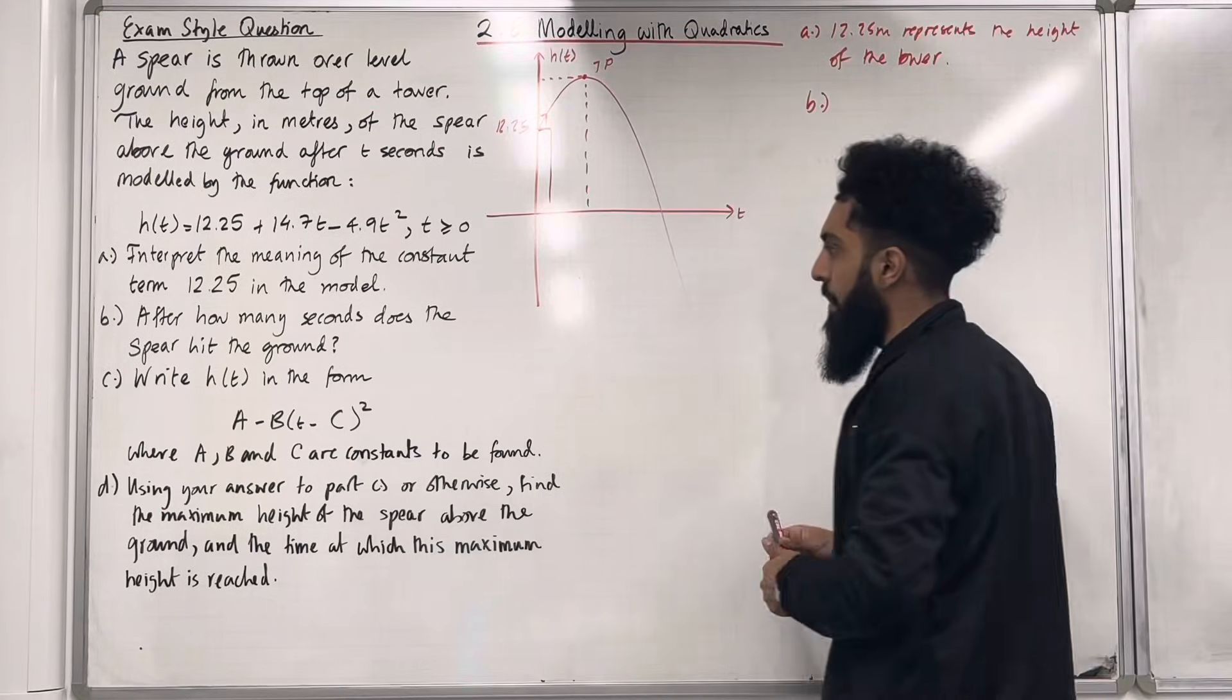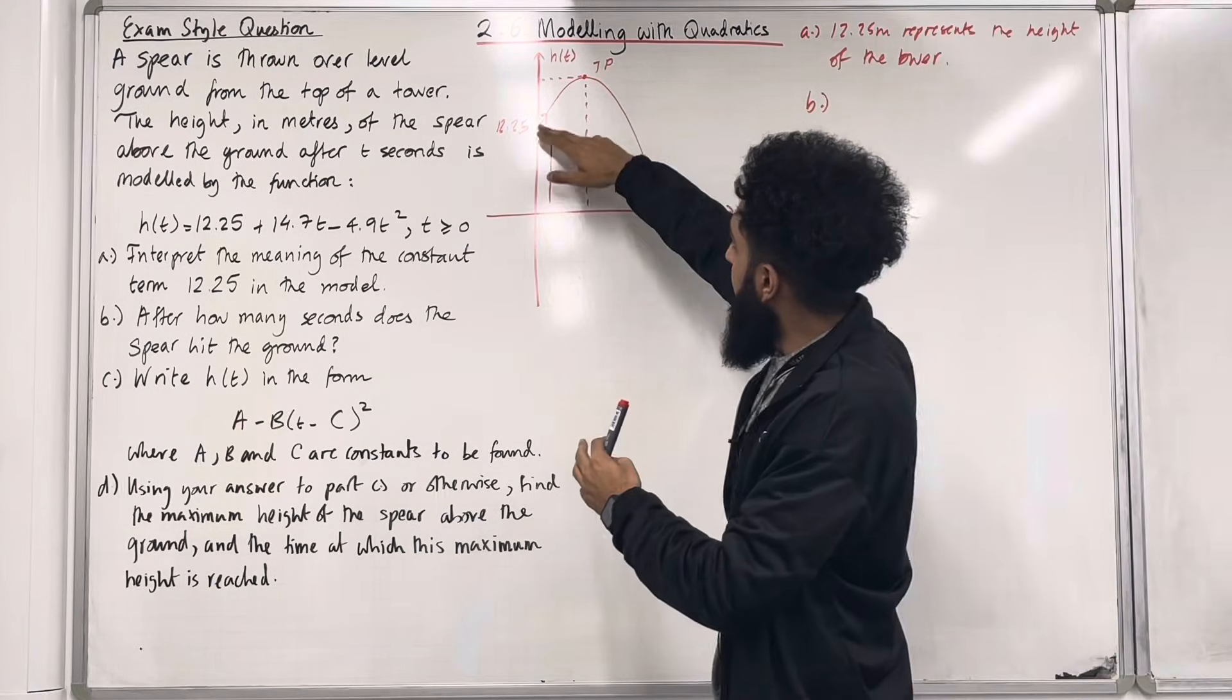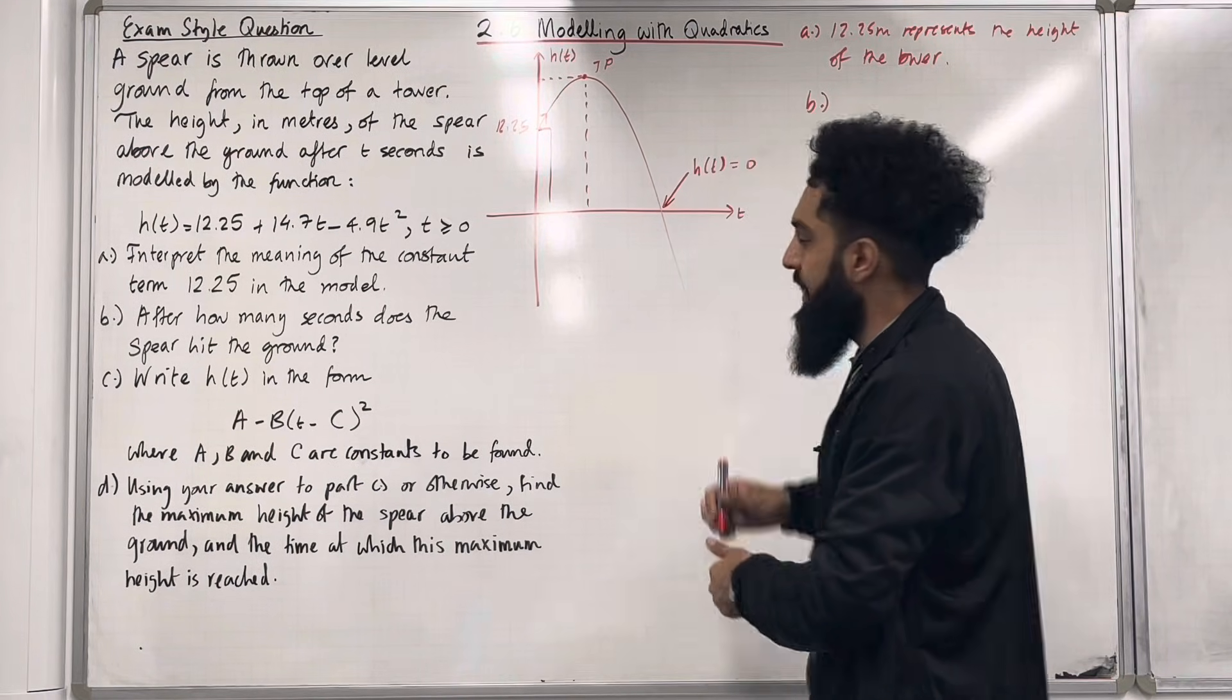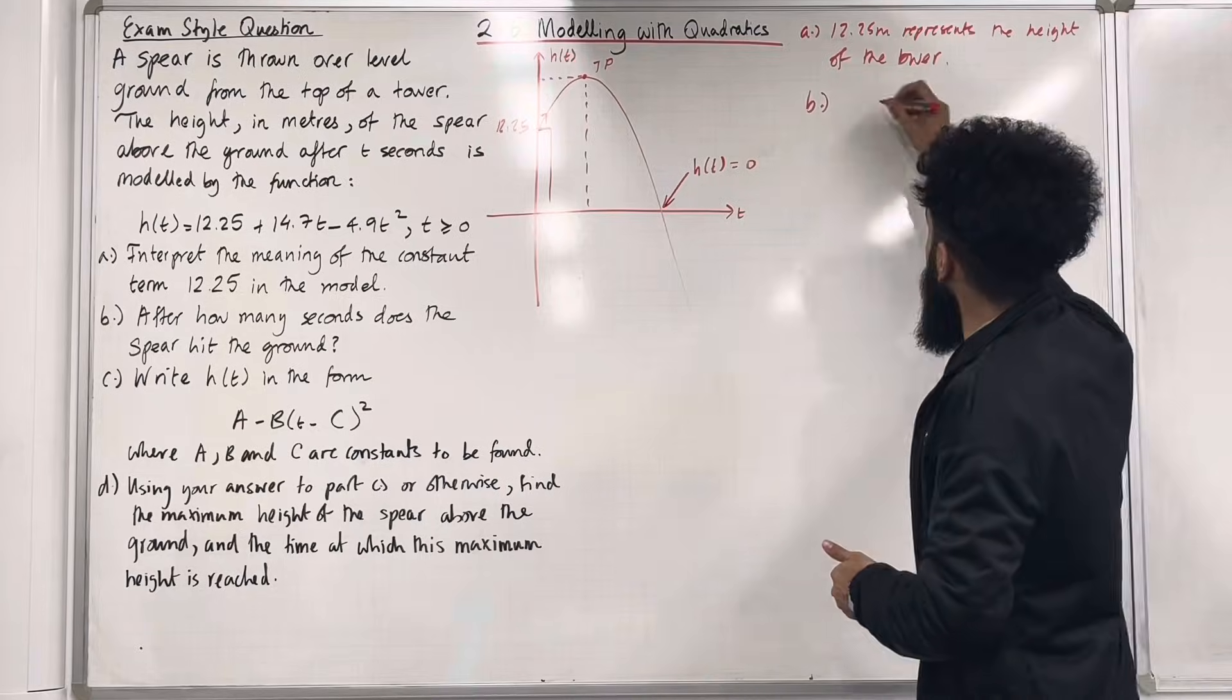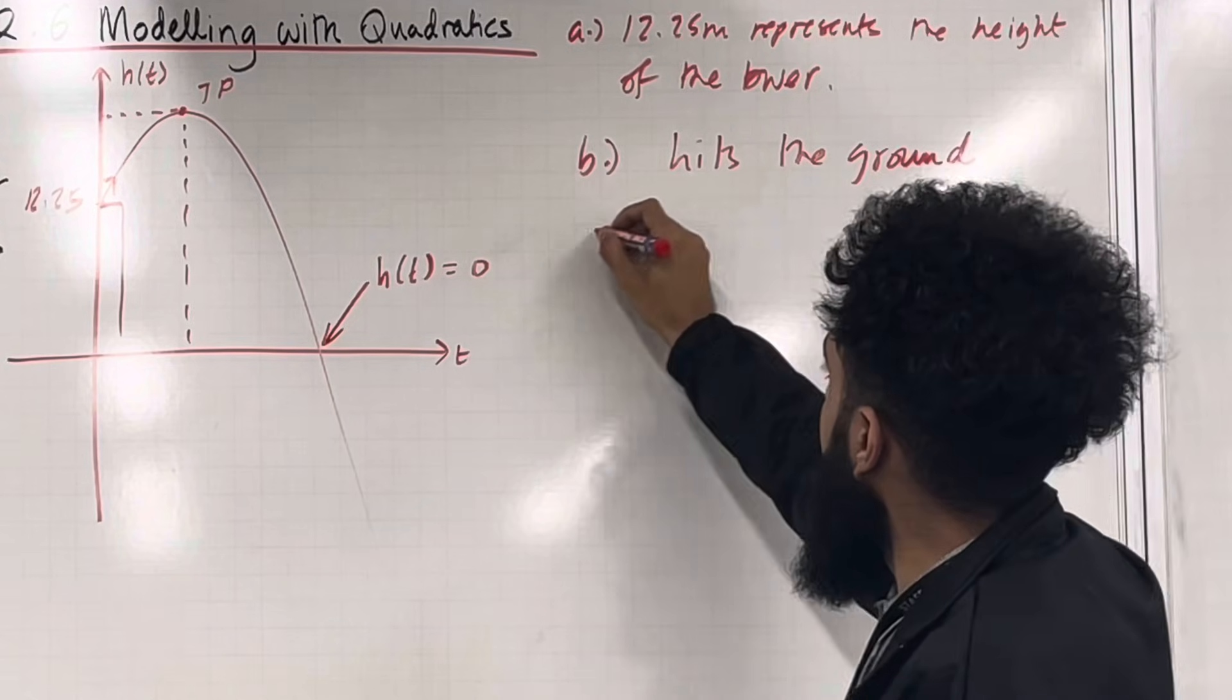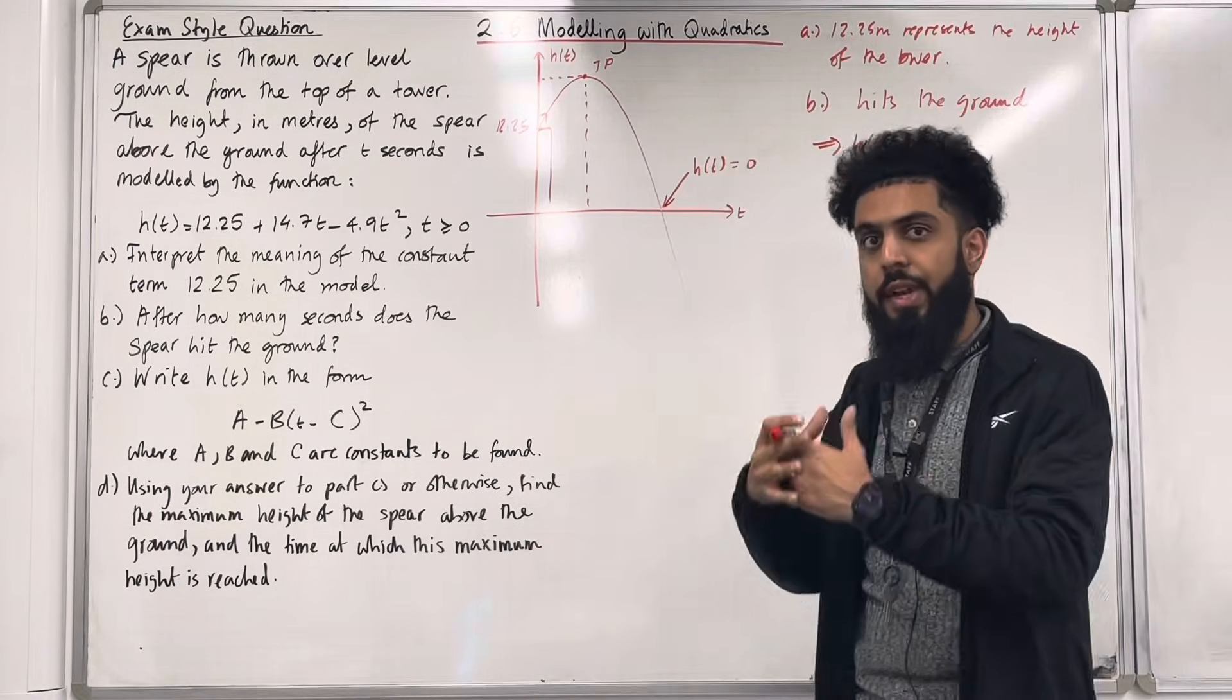Moving on to part B. After how many seconds does the spear hit the ground? So if you go back to the diagram the spear will hit the ground over here. And at this particular point the height is equal to 0. The spear is on the ground, the height is equal to 0. So hits the ground implies that h(t) is equal to 0. So we have to set our quadratic function equal to 0.